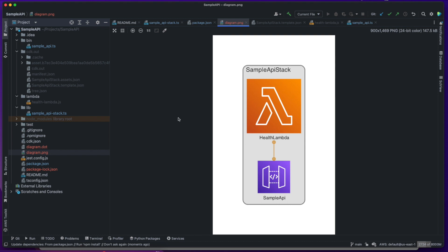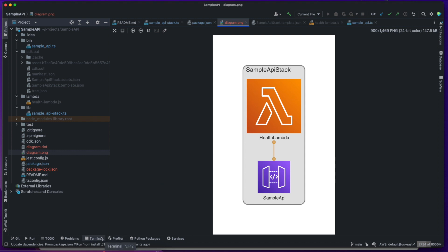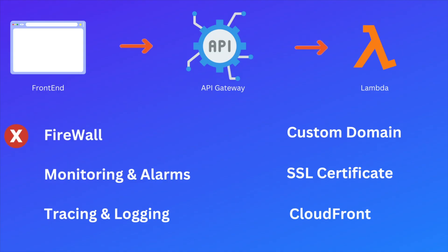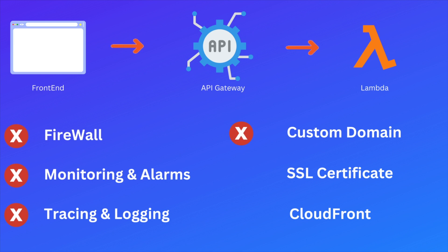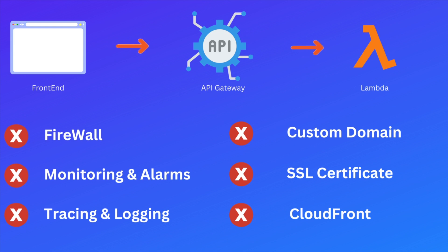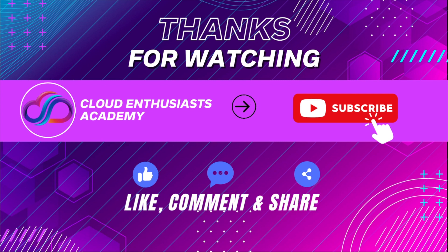While it was easy to provision the API infrastructure, this is certainly not production ready, because it does not have firewall protection, no monitoring and alarms for notifications, no tracing and logging, no custom domain, no SSL certificate, and no CloudFront for global distribution and low latency. This concludes our video for today. Thanks for watching, and see you guys in the next video.